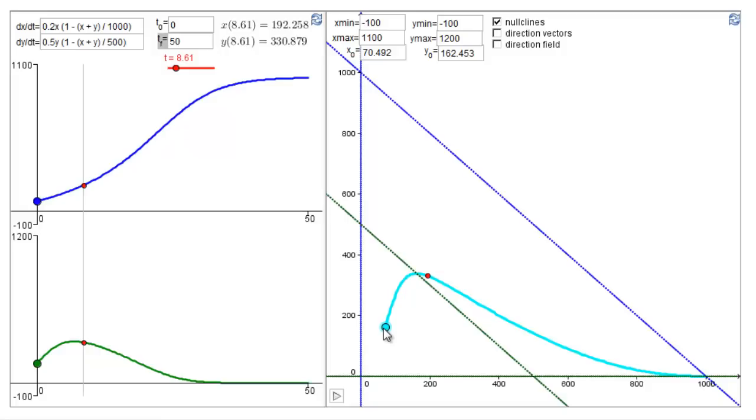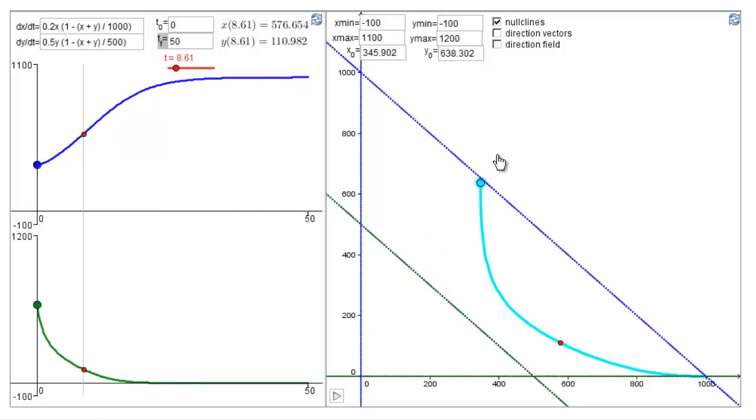Similarly, along the A nullcline, dA/dt is zero, meaning that there's no horizontal movement, since A is a horizontal variable. And indeed, the trajectory crosses the A nullcline vertically.